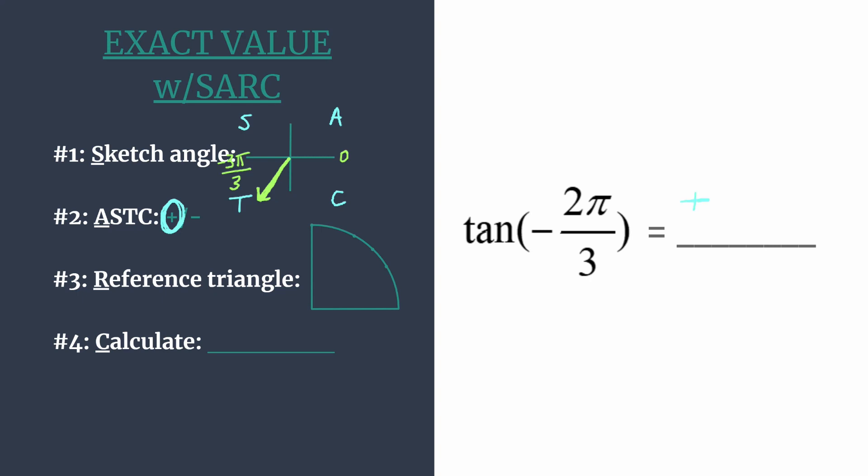We can even make a note over here in our final answer space—we know our value is going to be positive. If your angle's terminal side was in quadrant 4, that C tells you cosine and its reciprocal secant are the positive trig ratios there.